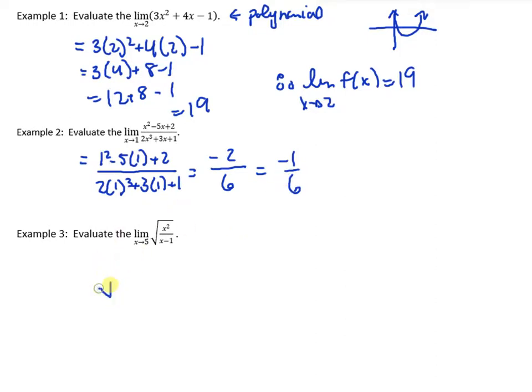Now let's try to sub in 5. We've got 5² over 5 - 1. So we have 25. And I'm going to break that root up, because when we have a root of an entire fraction, it's just the root of the top divided by root of the bottom. So we have 5 over 2. So those all work very, very nicely.